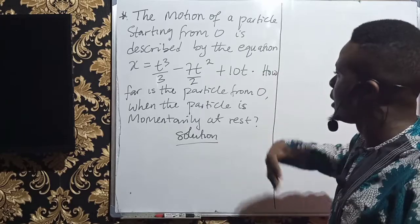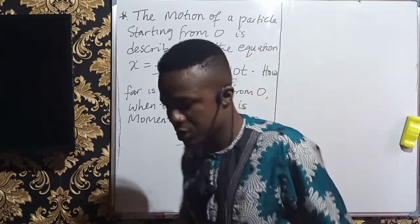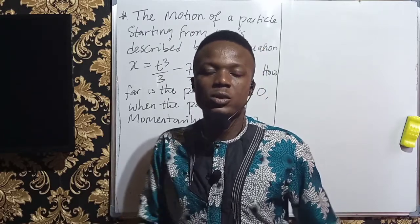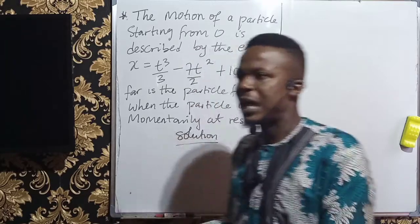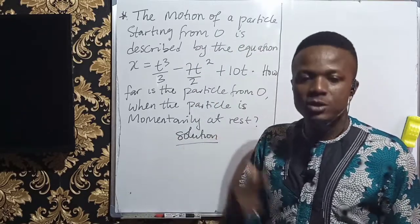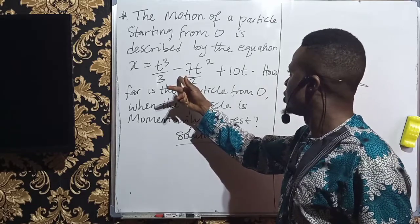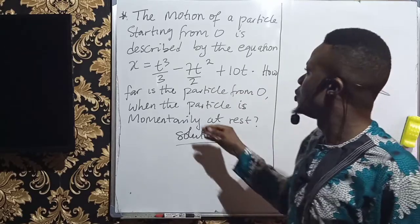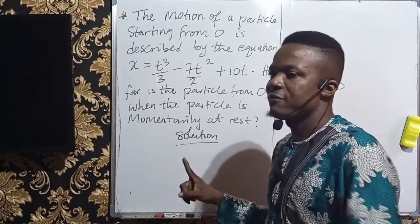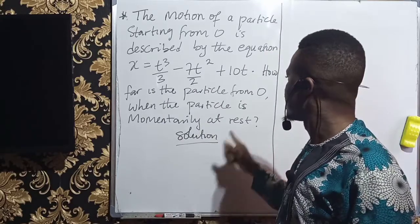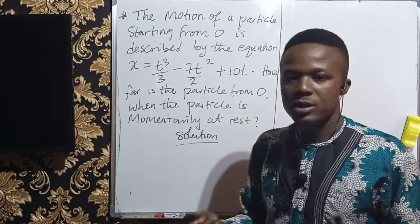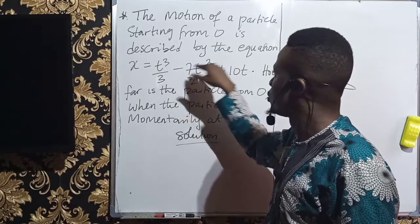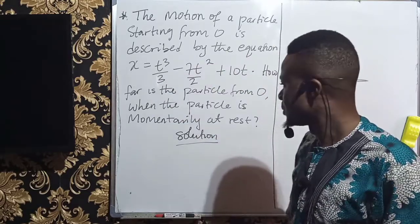So this is just the displacement and this is the time. And for a body to be at rest, it means that the velocity is 0, since it's starting from O. So the initial velocity here is 0. Therefore, we need to get velocity and make the velocity equal to 0, solve for t to get our t, then plug back in the original equation to get how far, because how far talks about distance. So the idea here is to differentiate this to get velocity, make that velocity equal to 0 since they said it is at rest.